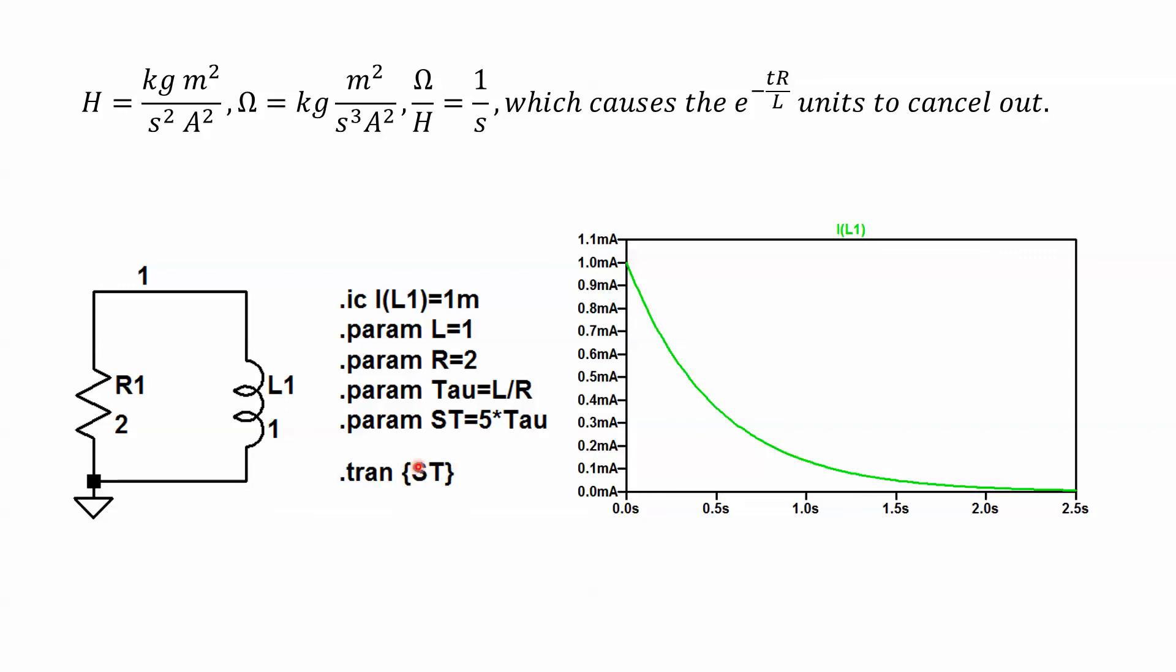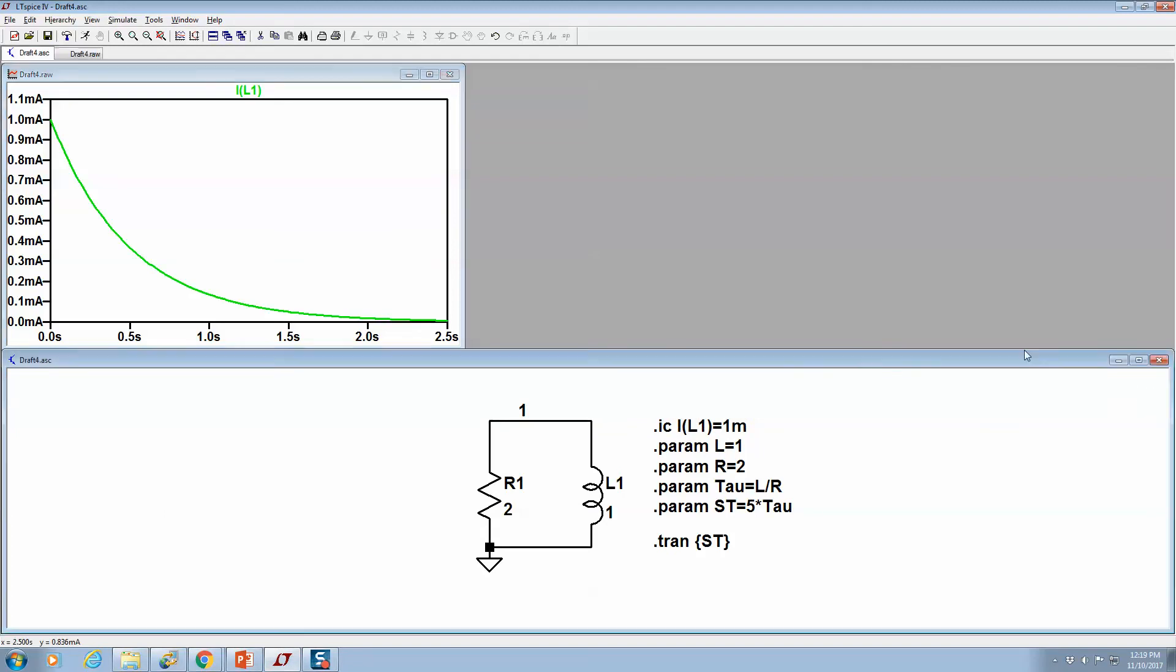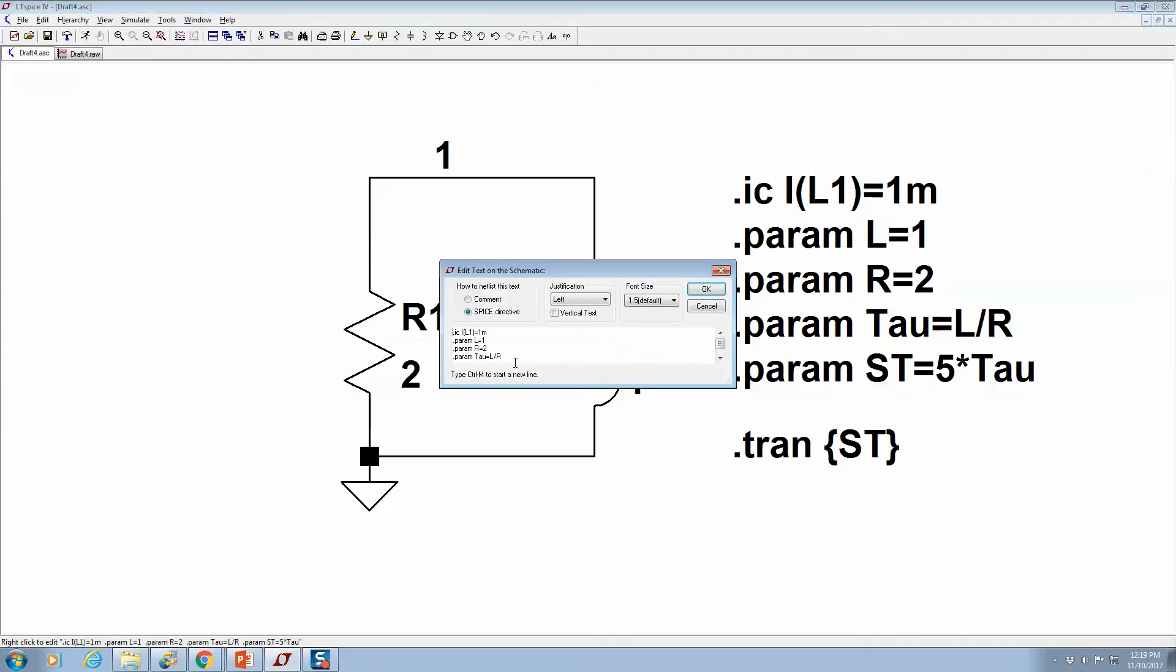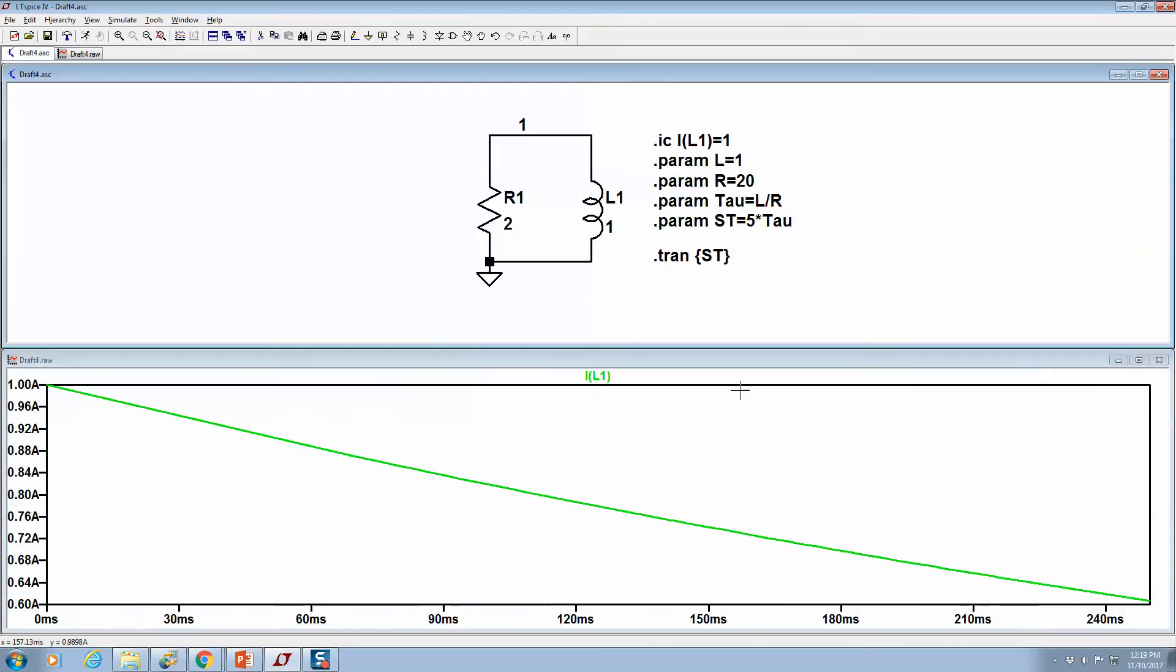All right, so the way that would work in LTSpice is, let's say I wanted, what if the initial condition were an amp and what if the resistance was 20 ohms?